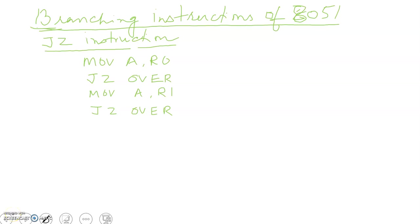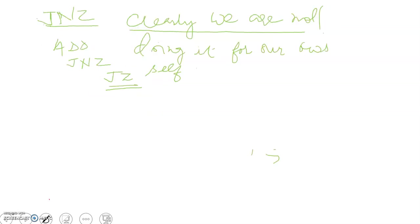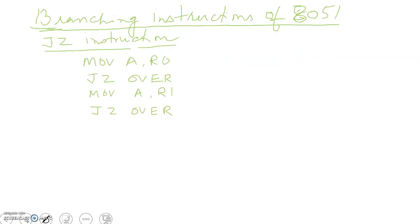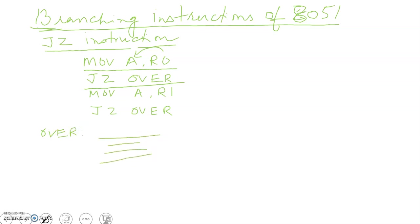Welcome to the lecture series on 8051 microcontroller. In the last lecture we were discussing the branching instructions of 8051 and we were doing the JZ instruction. I have written down a few instructions here to illustrate how JZ functions. The first instruction is MOV A, R0 — so whatever is in R0 will get copied into A. Then the instruction JZ, where 'over' is a label. This instruction checks whether A is 0 or not.